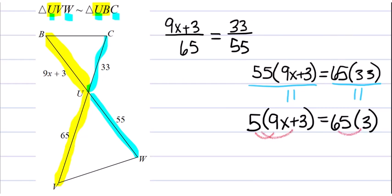When we get in to do our distributive property, we have 9 times 5. That's 45X plus 15. 65 times 3, 65 times 2 is 130 plus another 65 would be 195.